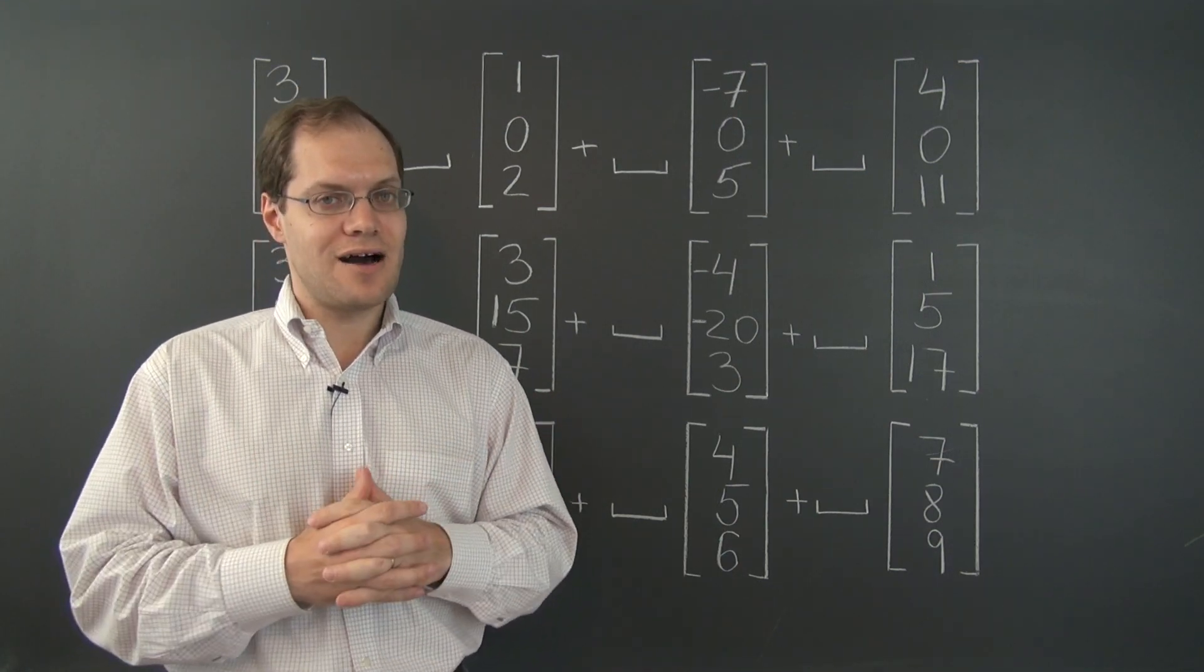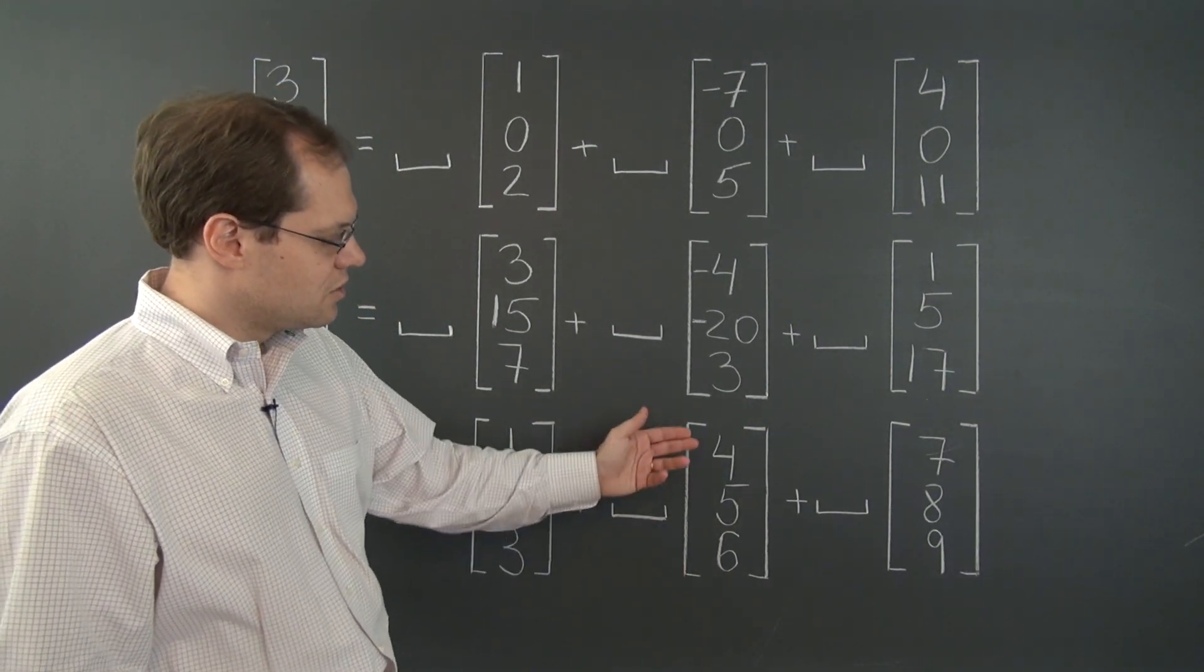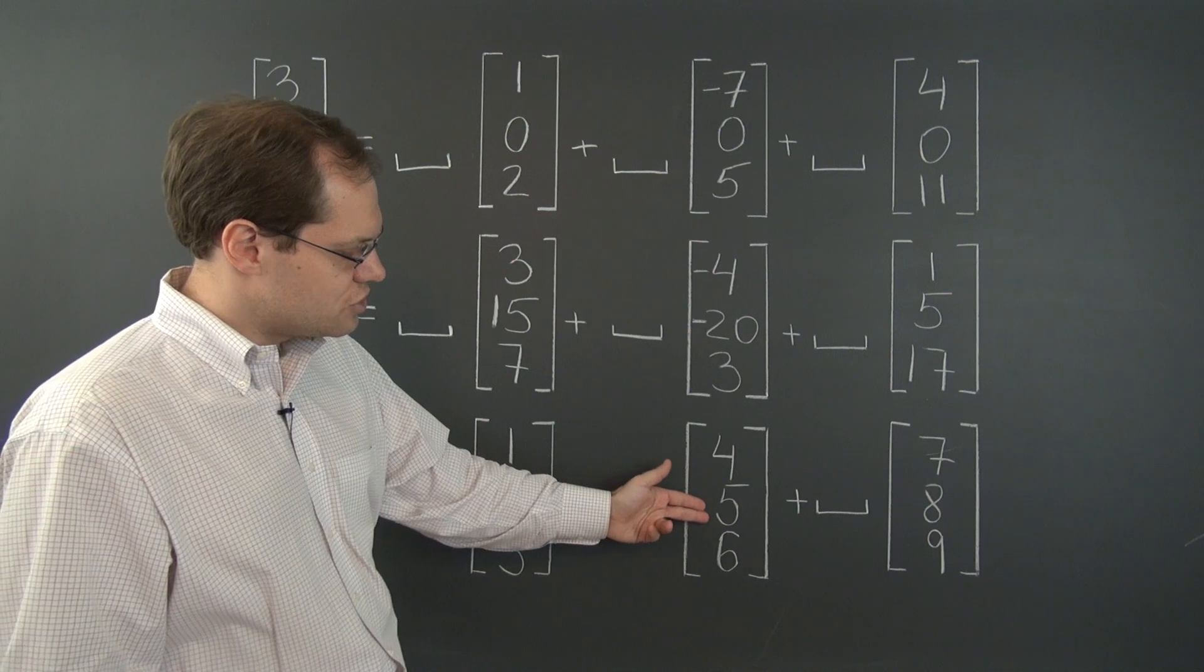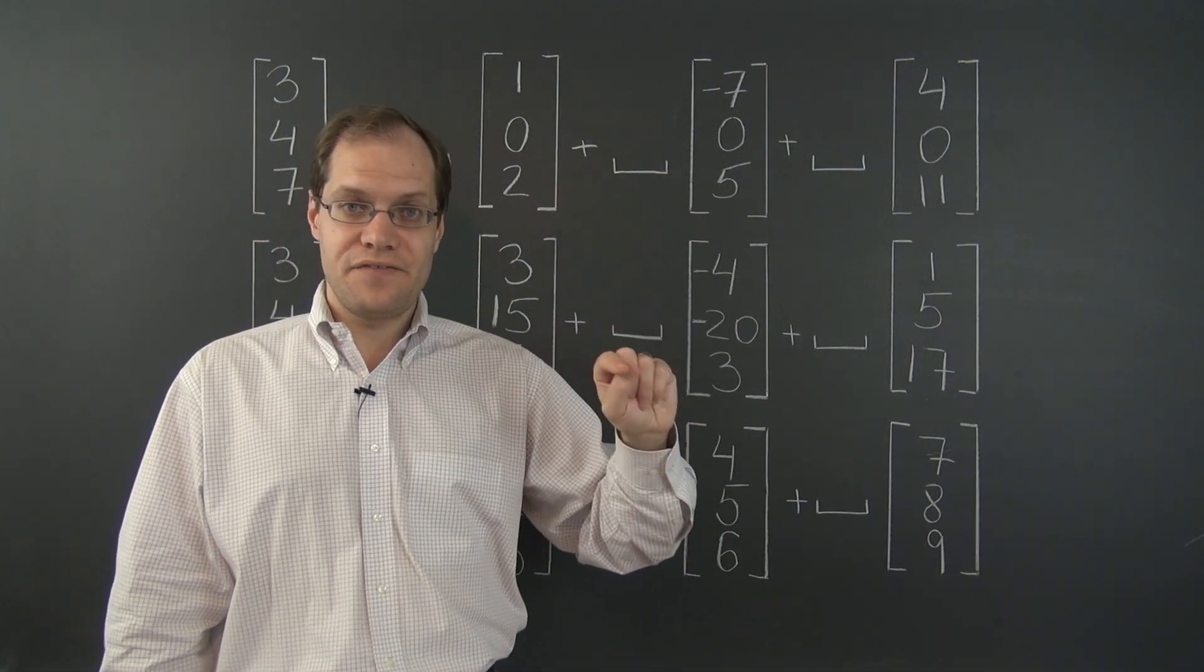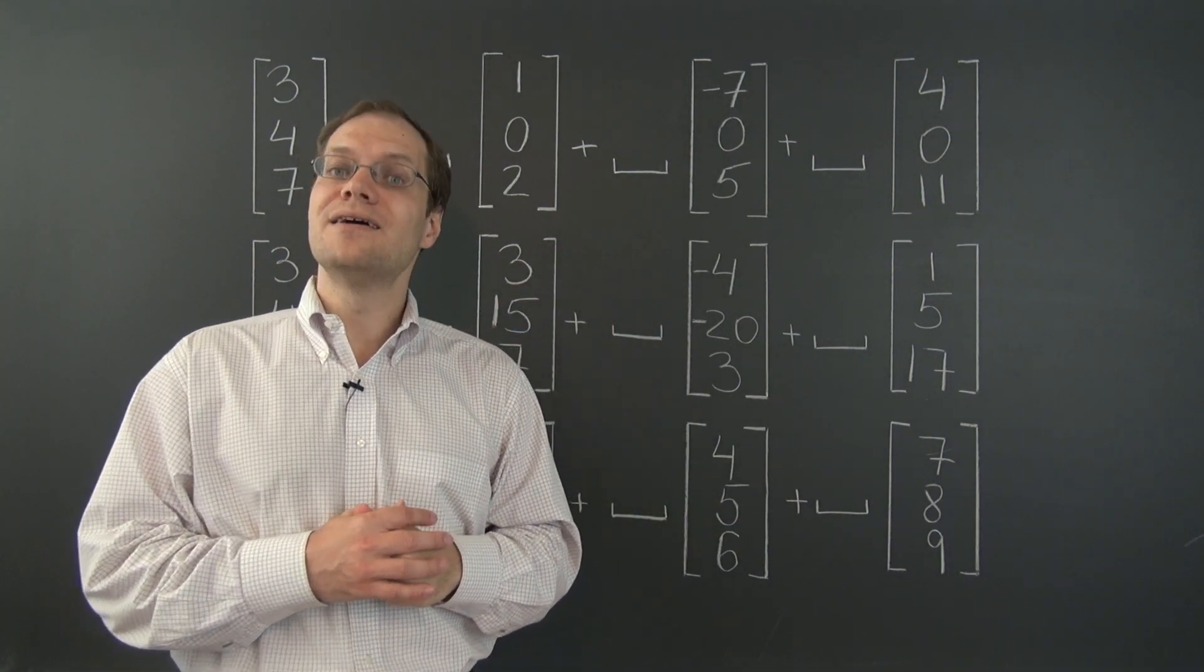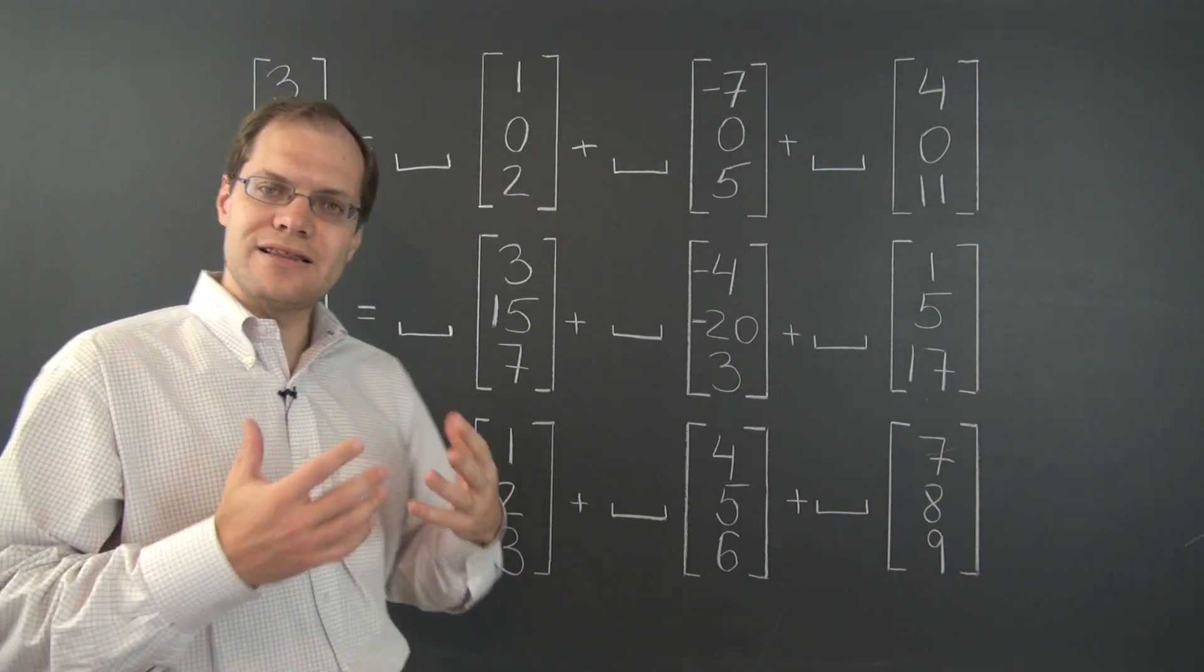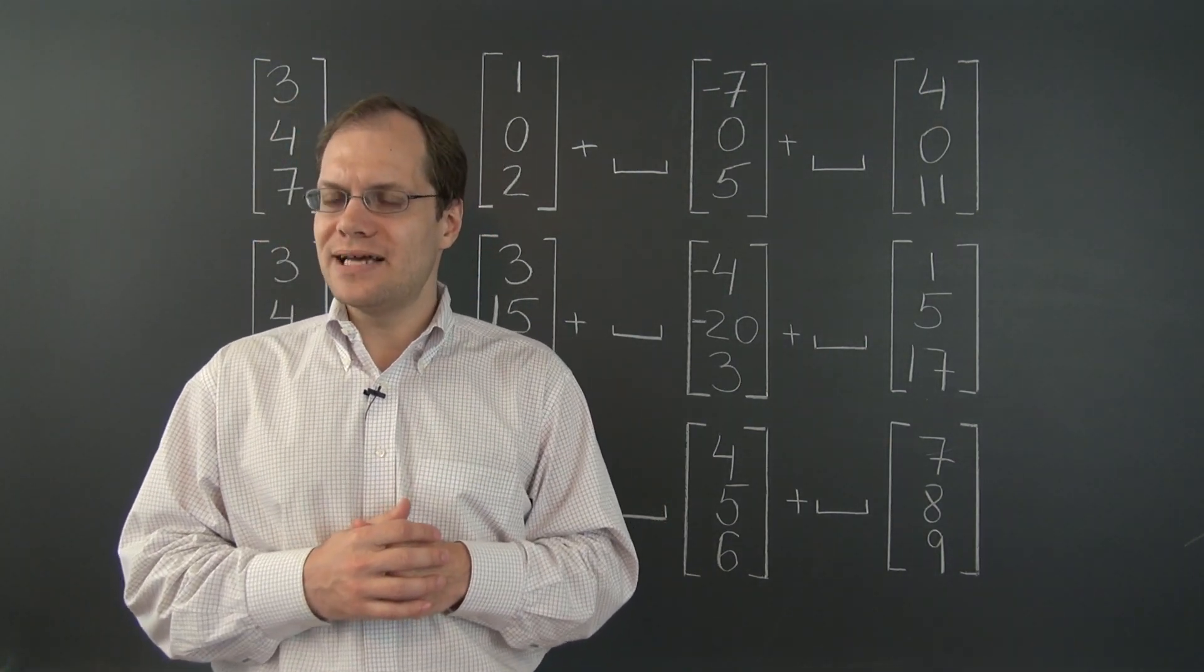And will the resulting vector also have that property? Well, I don't think it's obvious until you try it. So let's try it. Adding these two vectors together, we get 11, 13, 15. 11, 13, 15. Is 13 the average between 11 and 15? Yes, it is. So we see that this property at least survives addition.